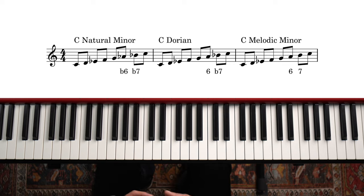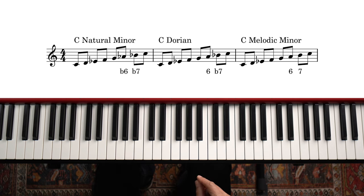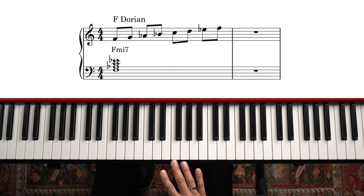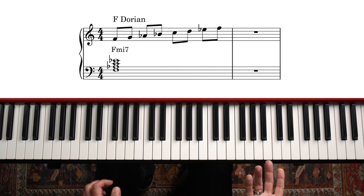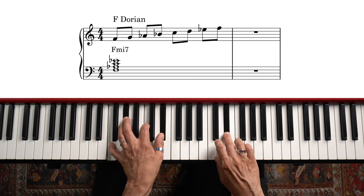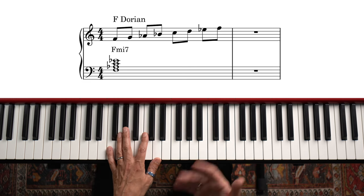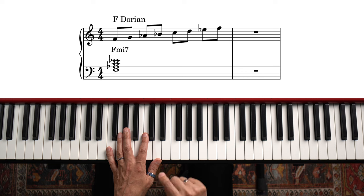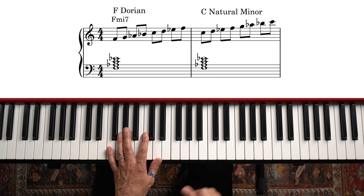So we already talked about the tonic scale. For the first two bars, depending on whether we choose to play C minor 7, C minor 6, or C minor major 7, we can play either C natural minor, C Dorian, or C melodic minor. For the F minor 7 chord, F Dorian is pretty much the only choice. Notice that F Dorian contains the same notes as C natural minor. This is where the key center and chord scale approaches overlap.